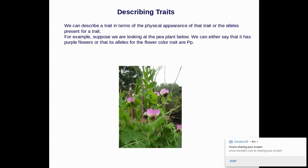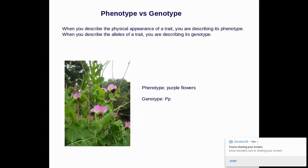We can describe a trait in terms of physical appearance of that trait or the alleles present for that trait. For example, suppose we're looking at the pea plant below. We can either say that it has a purple flower or we can say it has alleles for purple color, which are big P, little p, or it could be big P, big P. When you describe the physical appearance for a trait, you're describing the phenotype. So I always remember physical phenotype. They both start with P-H.